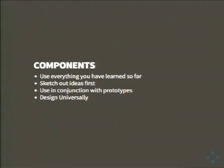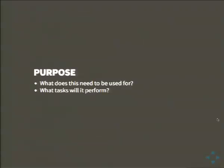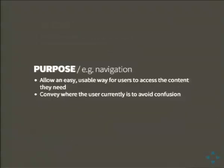When you're doing wireframes there are big gray boxes saying what components need to go there, but you haven't explained what they need to do yet. So you're bringing down that meaning and trying to put it into specific components. Then I'll sketch them out individually and put them into code. The first thing I work out when looking at a component is its purpose — what does it need, what's this component going to be used for, what task will it need to perform? A really obvious one is navigation. Navigation needs to allow an easy, usable way for users to access the content they need. But it also needs to convey where they currently are on the site so they get a context of what page they're on and how they can navigate away.